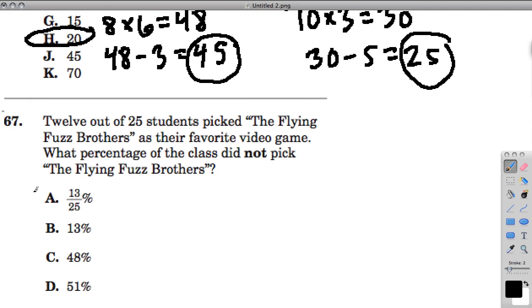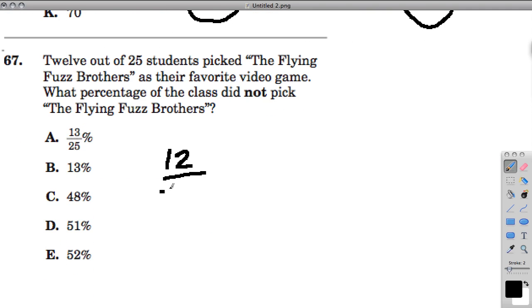The next problem, we have a percentage. 12 out of 25 students picked the Flying Fuzz Brothers as their favorite video game. They want to know what percentage of the class did not pick the Flying Fuzz Brothers game. I'm going to assume that there are 25 people here. If 12 out of 25 picked the game, we have to assume that the rest did not.